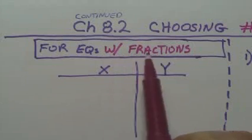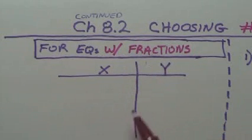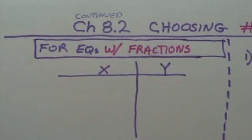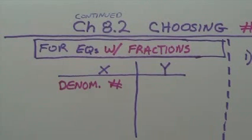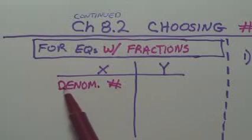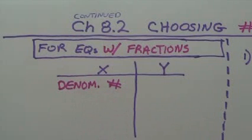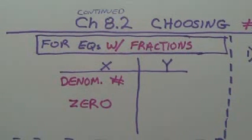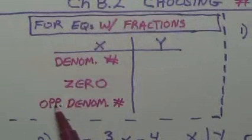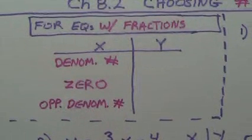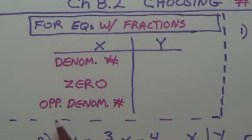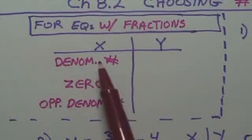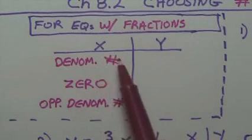Well, for equations with fractions, we're going to choose a denominator number. Whatever the denominator is, we're going to choose that number for x. We'll choose 0 for x, and the opposite of the denominator number. So these are the three types of numbers that we're going to choose for x.